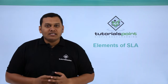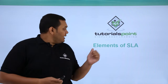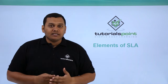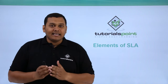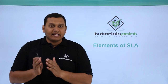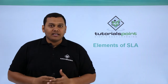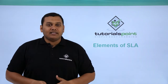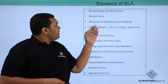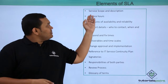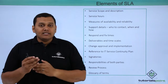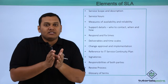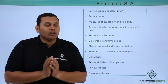In this video, we are going to discuss about the elements of SLA. As we discussed, SLA is a service level agreement between the customer and the organization. So what are the elements that come in this SLA? The first element is service scope and description — what is the scope for the service and how the service is described in that document.